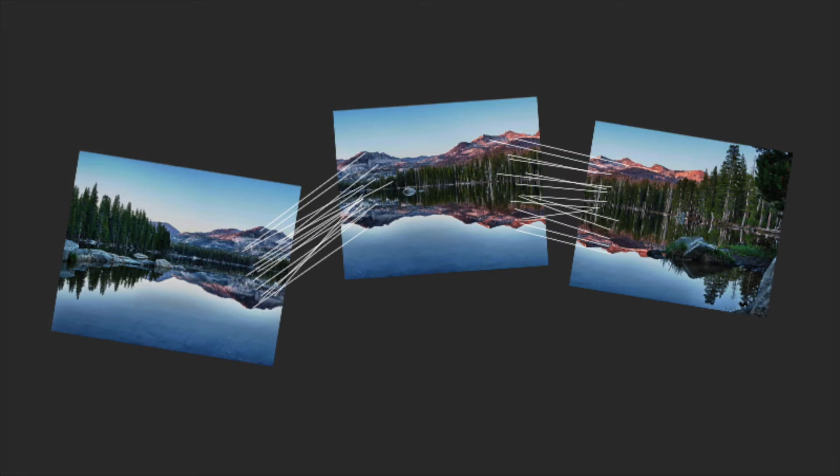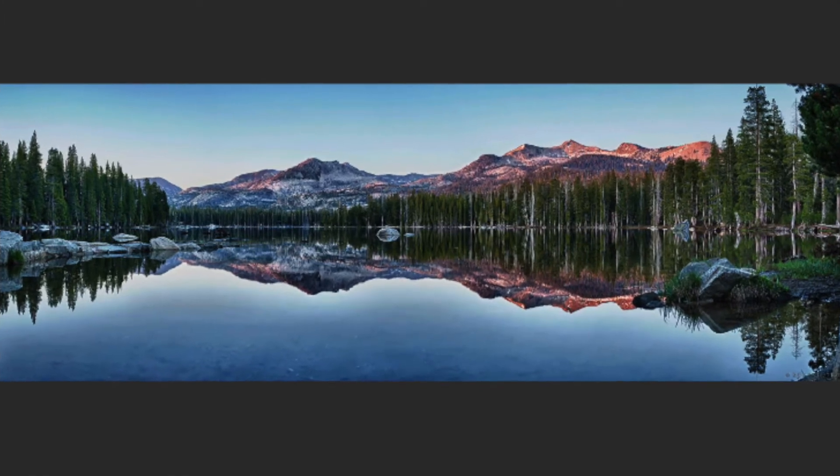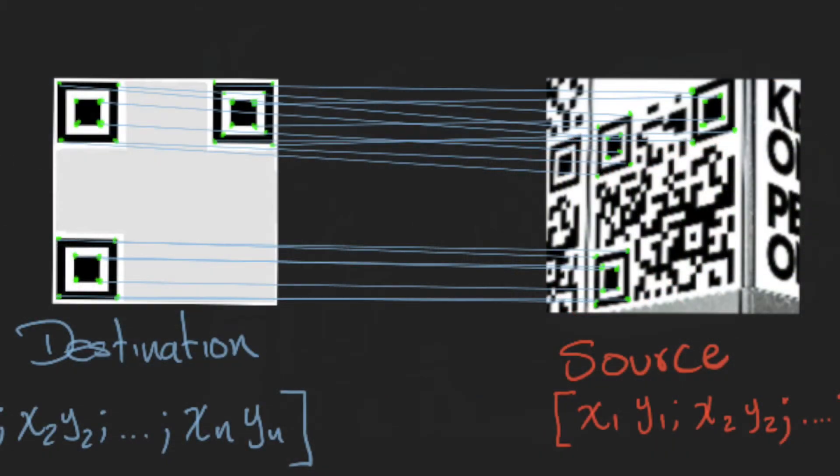In this video we will see how to register images when we have no landmarks. In our previous examples we used interest points or features to find the correspondence between images. This works really well when we take pictures of the same scene, because the structure of those interest points is somehow constant. Then we saw the example of the QR code, in which we use landmarks. Those can be computed automatically or manually selected.